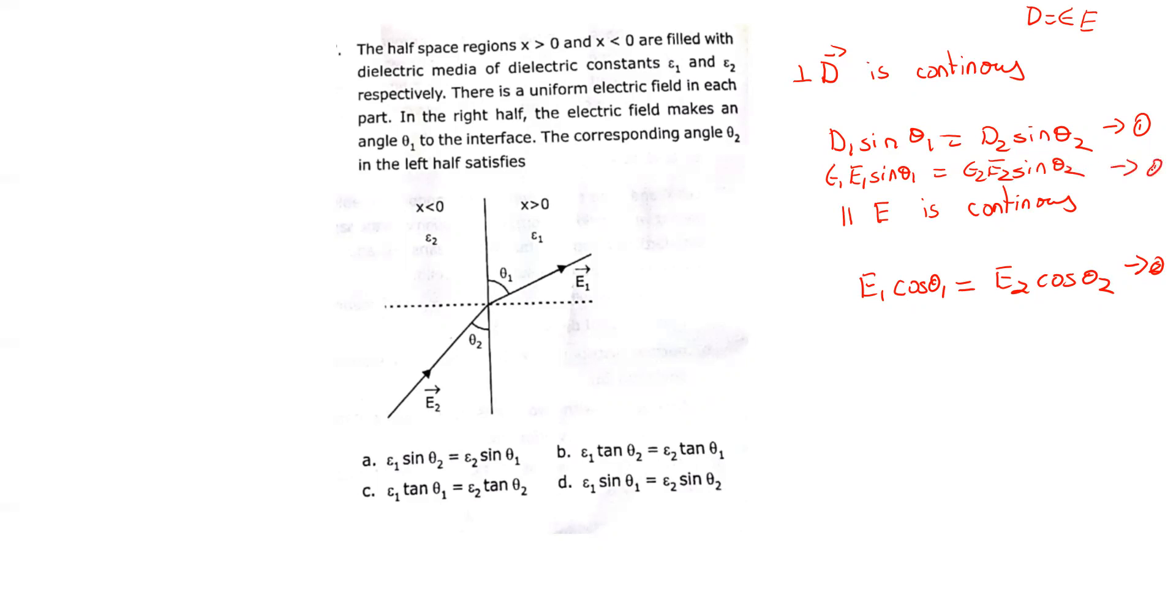Now let me divide equation 1 by equation 2. We get ε₁ tan θ₁ = ε₂ tan θ₂. This is the right answer. The correct option is option C.